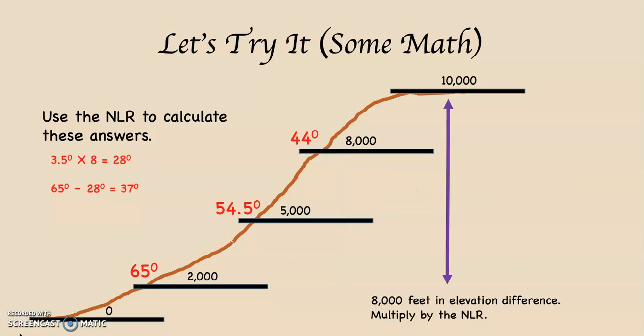You're probably getting the rhythm of this now. Going from 2,000 feet up to 10,000 feet is a difference of 8,000 feet. We multiply the normal lapse rate of 3.5 times 8, which equals 28 degrees. It will be colder at 10,000 feet, so we take 65 minus 28, which leaves us with 37 degrees. That means at 10,000 feet at the top of this mountain, the temperature is 37 degrees.